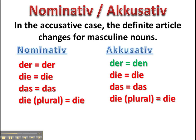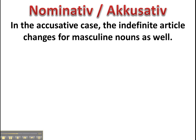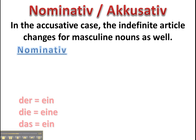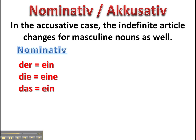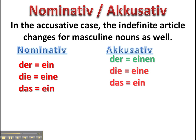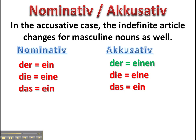Die and Das stay the same. So in the accusative case, the indefinite article also changes for masculine nouns, or you may think of them also as Der words. The Nominativ for masculine nouns is Ein, feminine nouns is Eine, and for Das words it's Ein. In the accusative, these masculine nouns will change to Einen. And Die and Das words will stay the same — they will remain Eine und Ein.